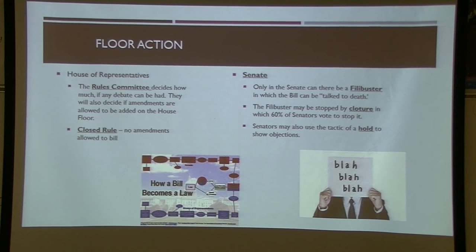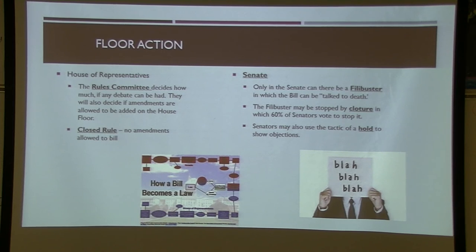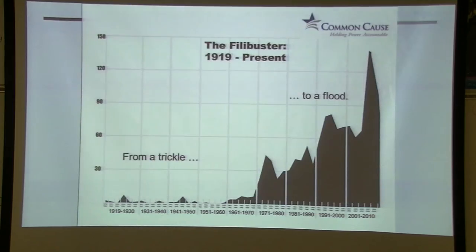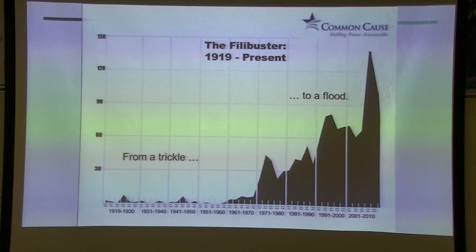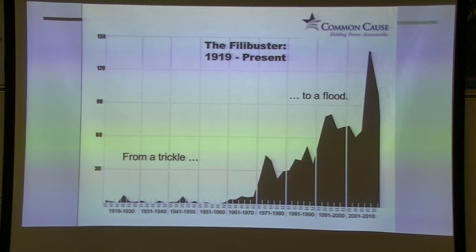In the old days a filibuster required actually standing on the floor and talking. Today you can simply declare you're going to filibuster, and unless 60 senators vote for cloture — telling the filibustering senator to sit down — the bill is blocked. There are ongoing debates about whether to end the filibuster or return to the old rules. Another tactic is a 'hold,' where a senator objects and requests investigation, which is another way to slow down a bill. Since the rules changed in the 1970s, filibusters have increased significantly.